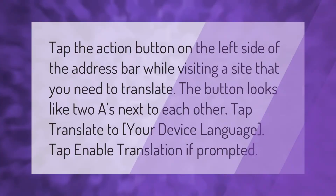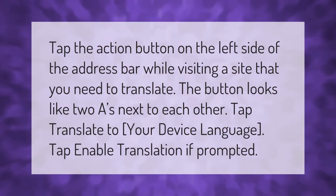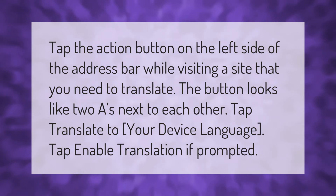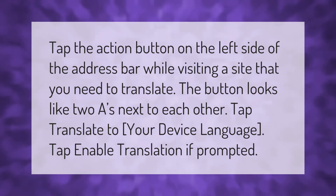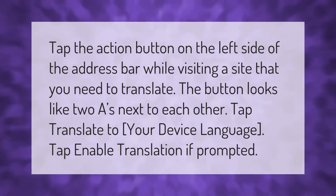Tap the action button on the left side of the address bar while visiting a site that you need to translate. The button looks like two arrows next to each other. Tap 'Translate to your device language,' then tap 'Enable Translation' if prompted.